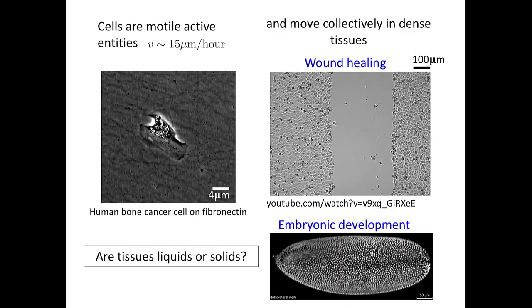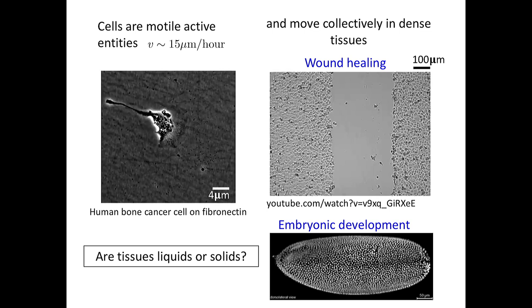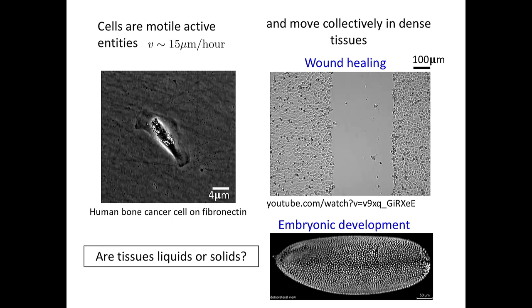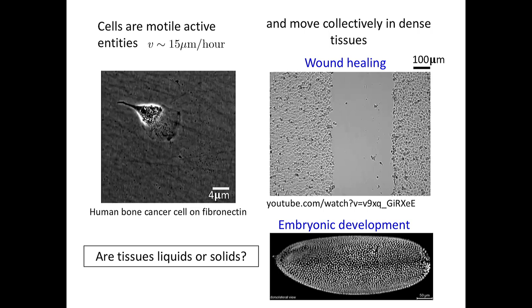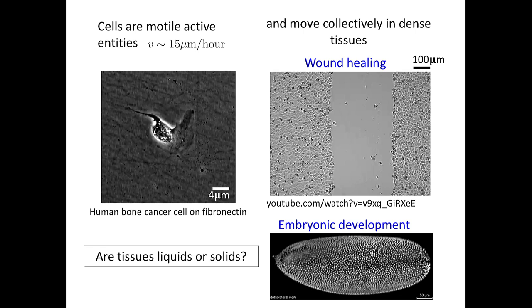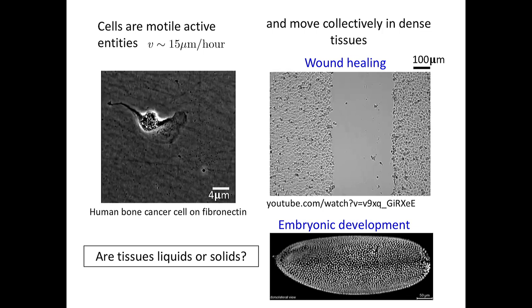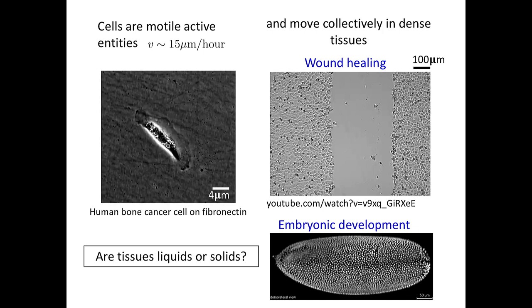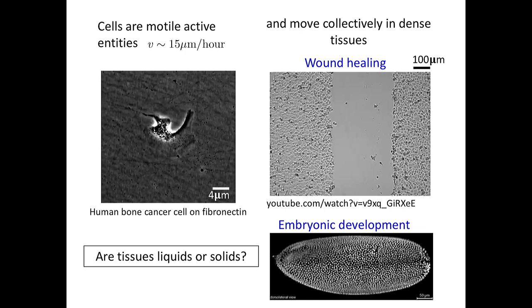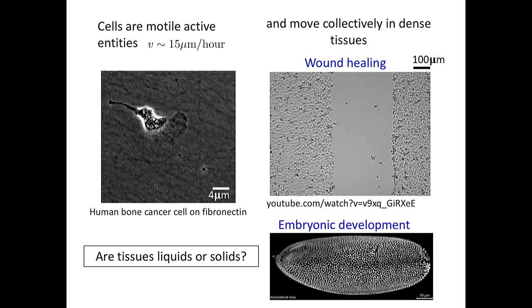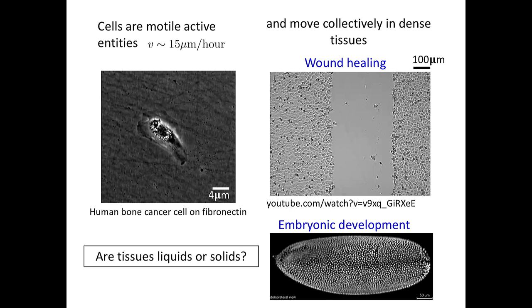Cells are clearly very complex objects. But for the purposes of this talk, I want to think of a cell as a soft, motile unit that can crawl on a substrate by a cycle of contractions and expansions, driven by internal molecular processes capable of transforming chemical energy into forces and mechanical work. Cells move generally pretty slowly—tens of microns per hour—much slower than, say, the speed at which bacteria swim.